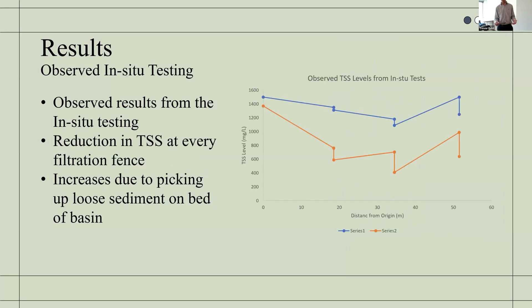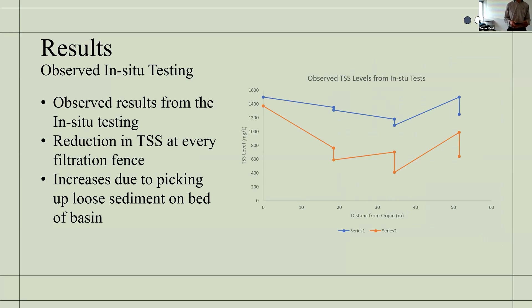For the in-situ tests there was also a large initial drop in TSS, again due to heavy particles being dropped out through that early flocculation process. Both tests also show multiple vertical drops where it was observed that the runoff had flowed into a geotextile filtration fence, removing suspended solids and decreasing TSS. This definitely correlates with the original theoretical lab test results.